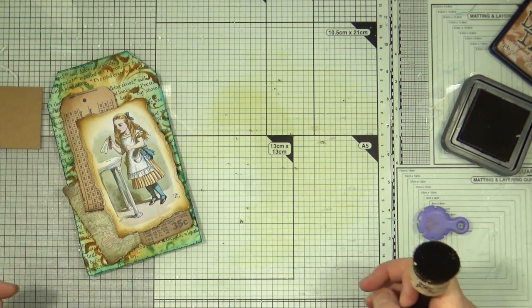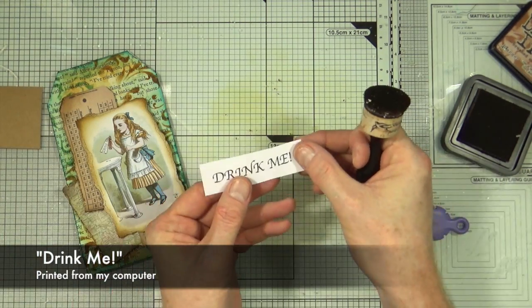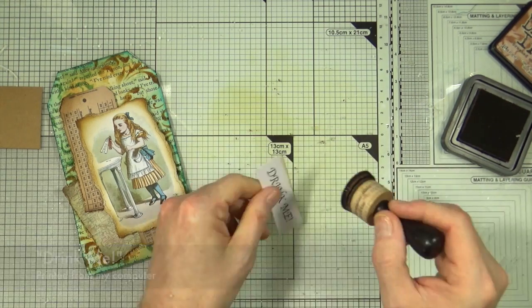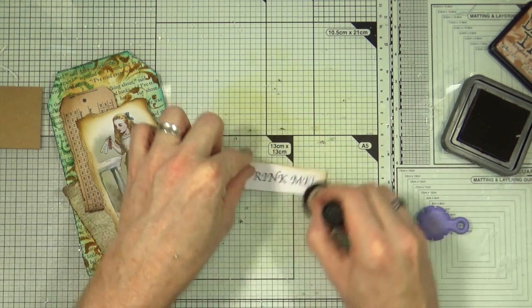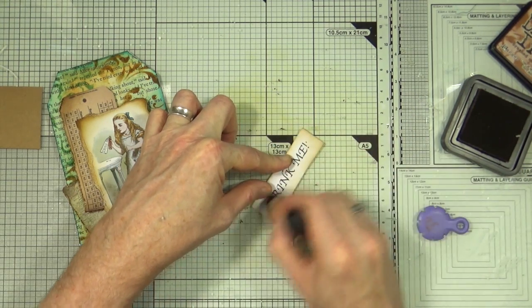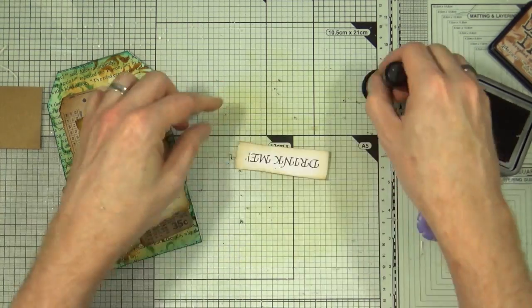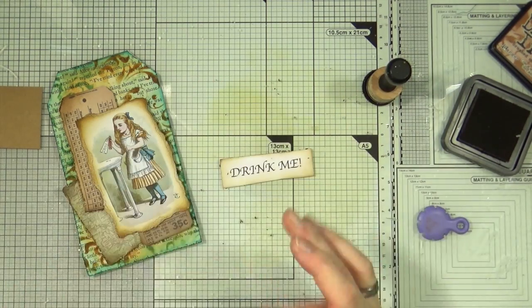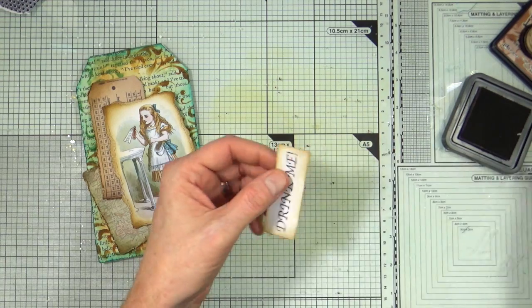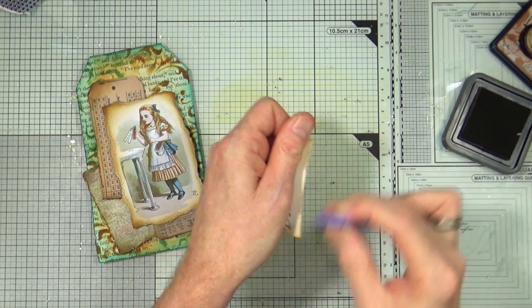Next up is my title for the tag which is simply just the word 'drink me' that I've printed out on my home computer. This is just on the inkjet this time and all I'm doing is just distressing the edges like I have done with all the other bits of ephemera and then I'm just going to scuff that up a little bit also.